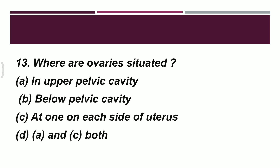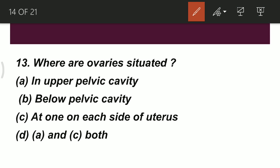Question 13: where are the ovaries situated in the female reproductive system? Option A: in the upper pelvic cavity. Option B: below the pelvic cavity. Option C: one on each side of the uterus. Option D: A and C both. The correct option is D — A and C both — the ovaries are located in the upper pelvic cavity, one on each side of the uterus.